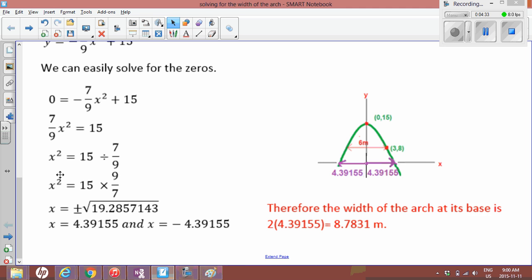The opposite operation of squared is the square root and when we take the square root we know that there's two possible answers, it could be positive or negative. So when we take the square root we get 4.39155 and negative 4.39155. So the negative just tells us the distance from the center going to the left and the positive tells us the distance from the center going to the right.